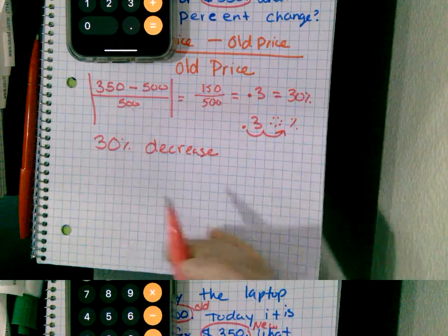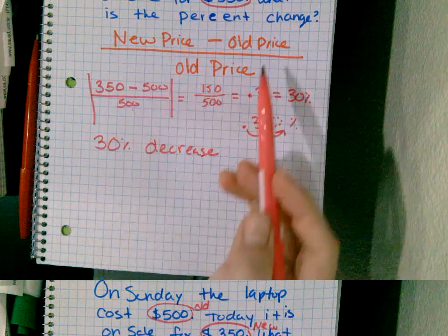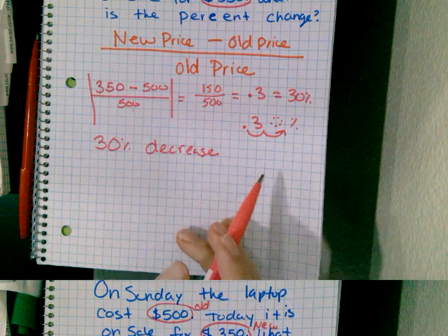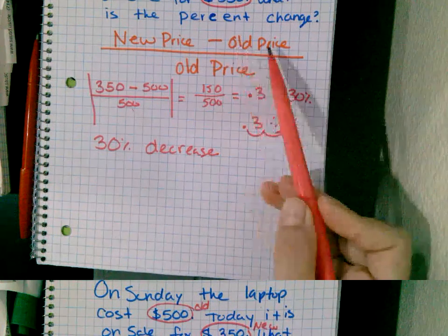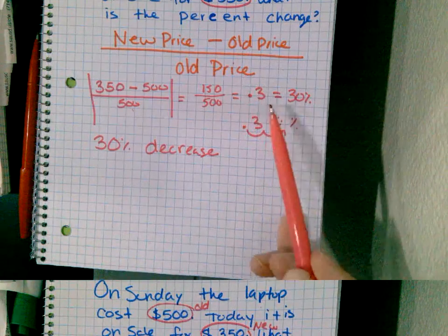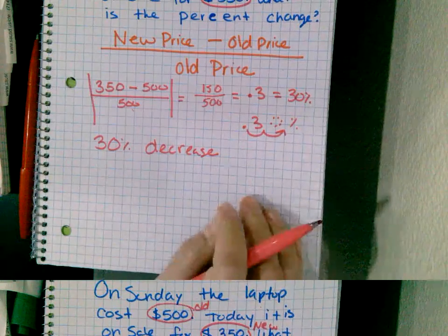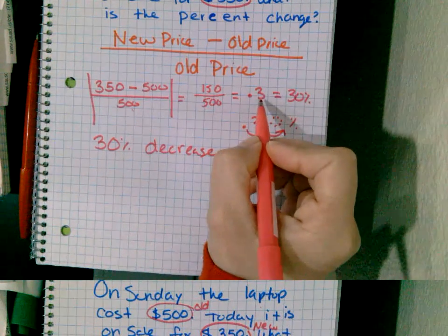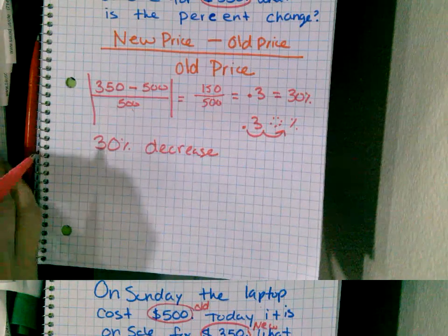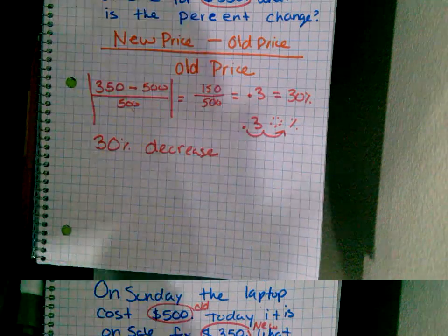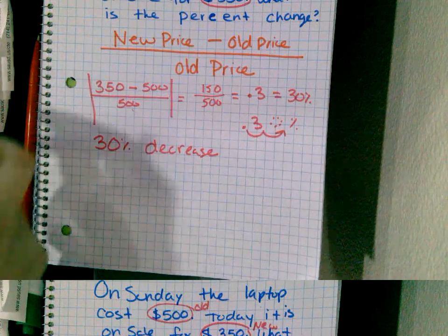So this is a 30% decrease — you saved 30%. The percent change is 30%. To summarize: take your new price minus your old price, divide by your old price, that gives you a decimal, turn it into a percent. You can also multiply the decimal by 100 to get the percent.